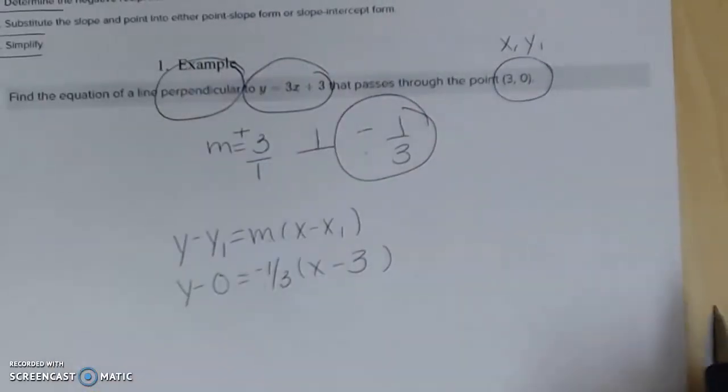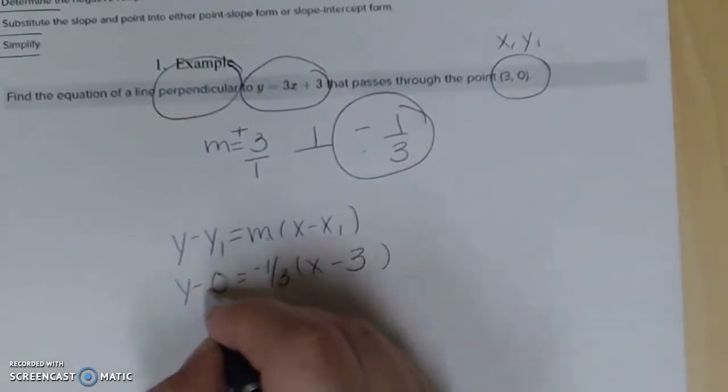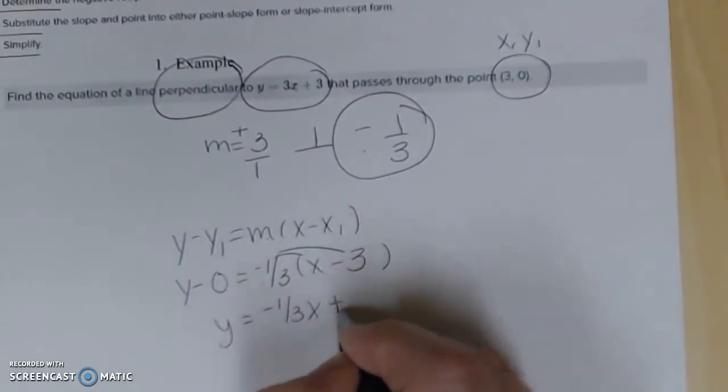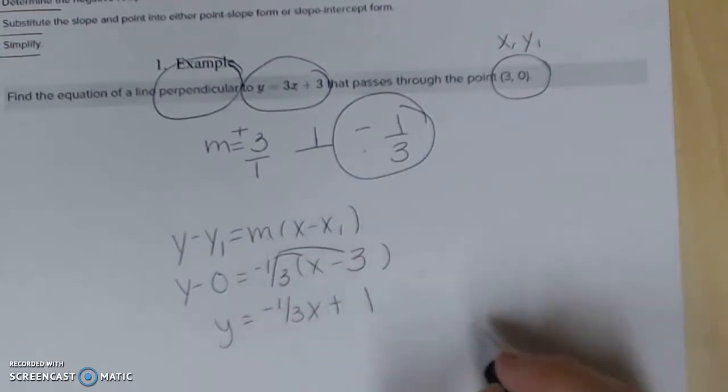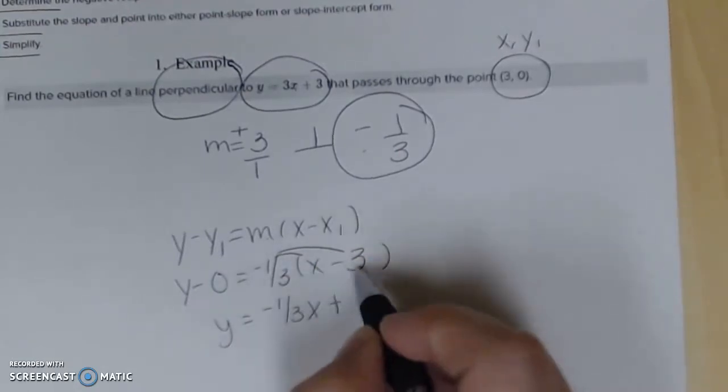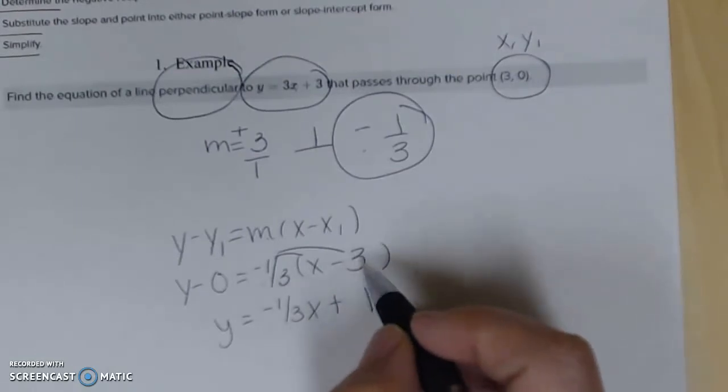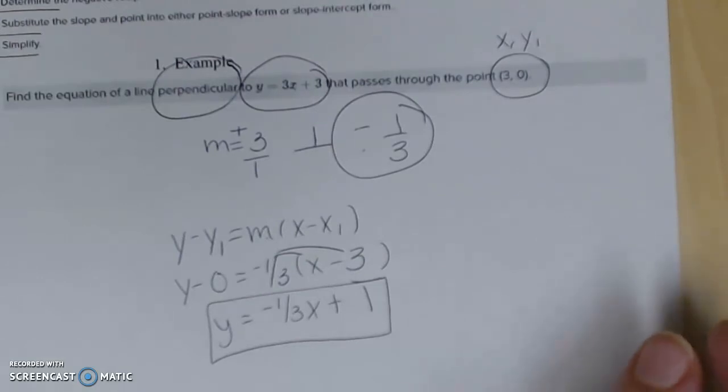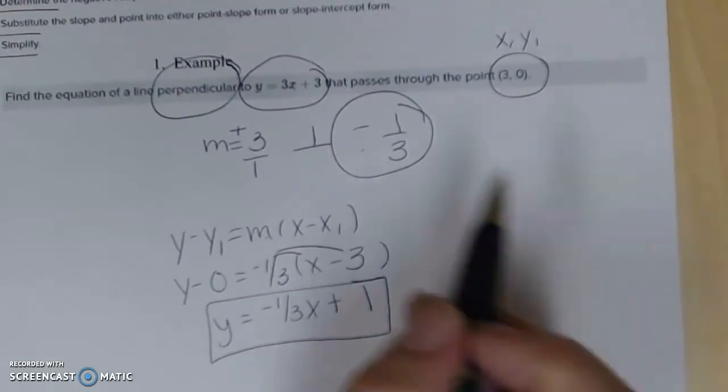So I'm gonna solve it out. y minus 0 just gives me y. Distribute gives me negative 1/3x plus 1—you're multiplying negative 1/3 times negative 3. Use your calculator or what you know about multiplying fractions. And then this gives me y equals negative 1/3x plus 1.